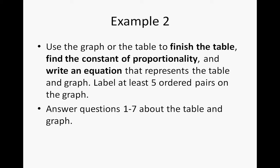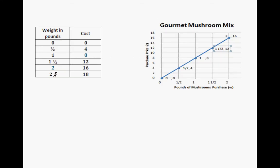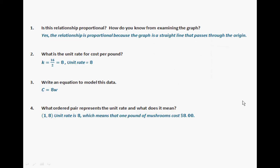So you have finished example 2. Let's go ahead and check your answers. So here is the table, finishing the table with 8. 1 is to 8 and 2 pounds is to 16 dollars. And here are at least five labels that you would label on your graph. And here is part of the answers to the questions. Make sure you pause the video and check your answers, making sure that you identify the unit rate and also an equation to model this data.